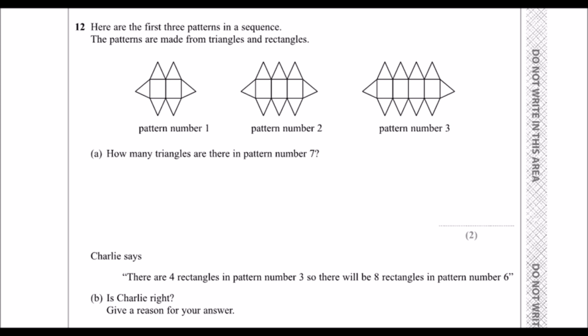Question 12: Here are the first three patterns in a sequence. The patterns are made from triangles and rectangles. How many triangles will there be in pattern 7? So, looking at the triangles, the first pattern has 6, the second has 8, and the third has 10. The number of triangles is going up by 2 every time.